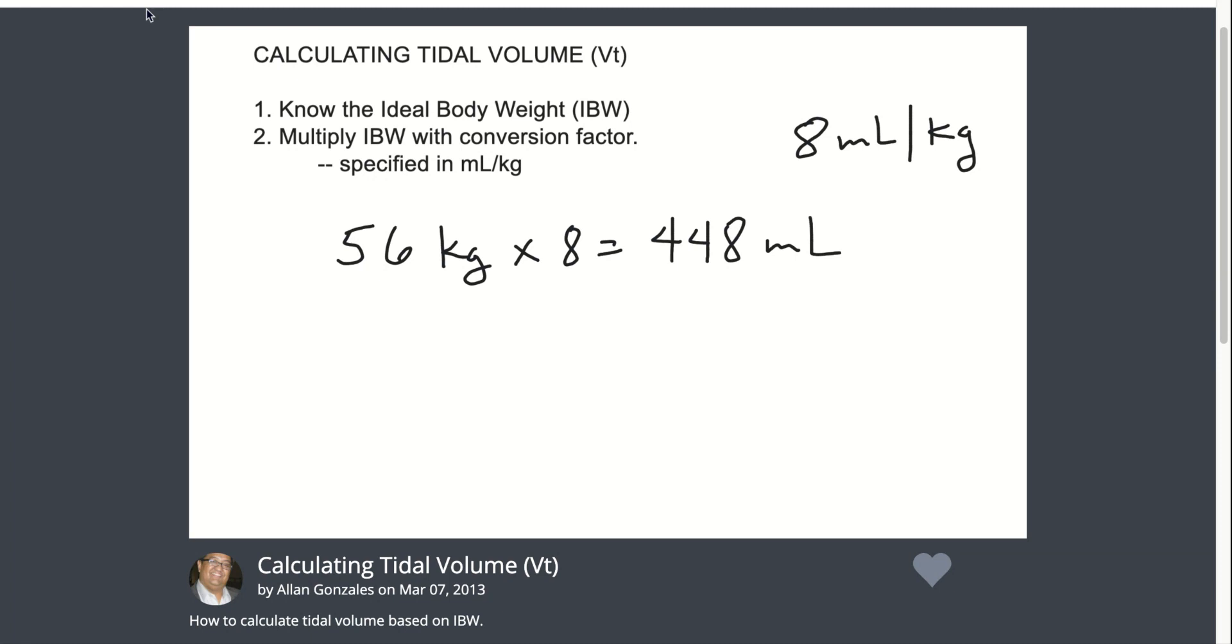Another example is if you have, let's say, a patient who is 70 kilos, and the conversion factor of 6 mLs per kilo will be given to you, you multiply that by 6 in order to get 420 mLs of tidal volume.